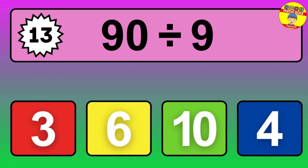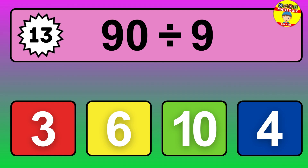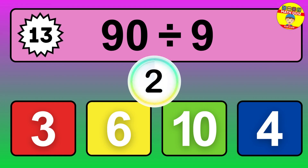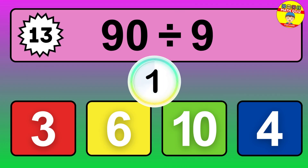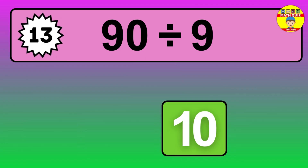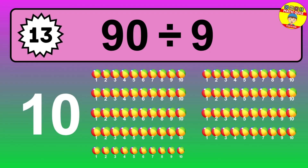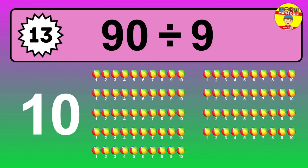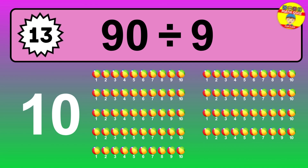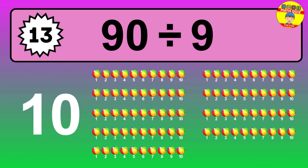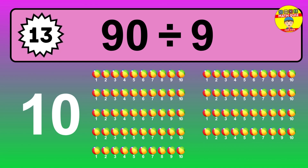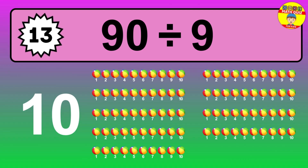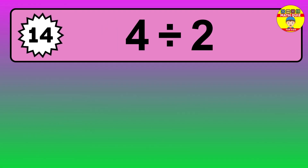What is 90 divided by 9? Picture this — you have 90 objects to divide into groups of 9. How many groups can you make? Let's think about it. Ready to find out? Let's break it down. Let's picture you have 90 objects. How about arranging them into smaller groups where each group consists of 9?